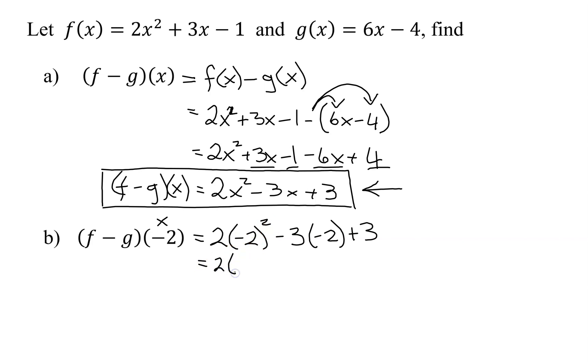So it's 2 times (-2)² is 4, minus 3 times the -2 is +6, +3. So 4 times 2 is 8, +6, +3. 8 + 6 is 14. 14 + 3 is 17. So the difference function evaluated at -2 is equal to 17.